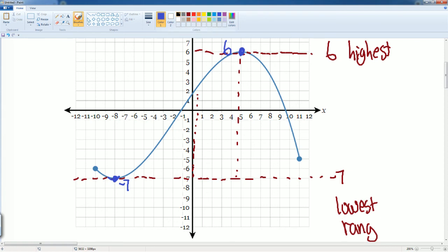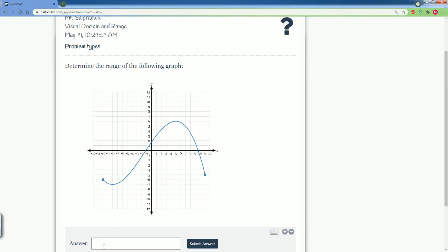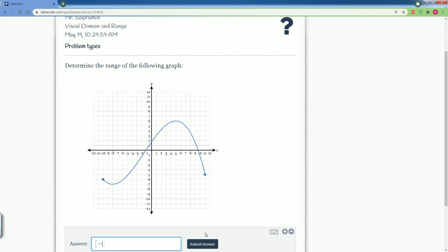It touches it. So you can say it's closed at negative 7 and it is closed at 6 because it both touches it. So it should be bracket negative 7 comma bracket 6. That's how it should look like. So it should be bracket negative 7 comma 6 bracket as well.